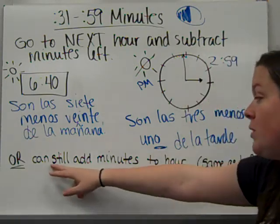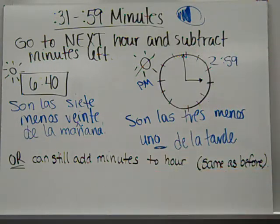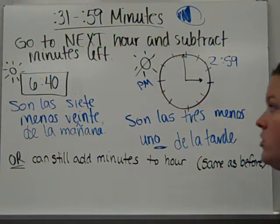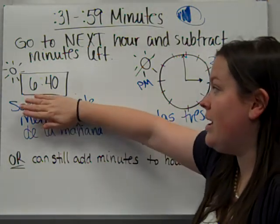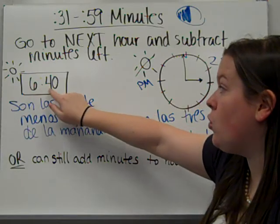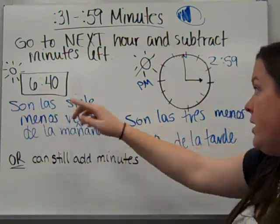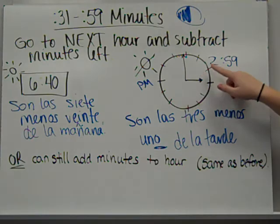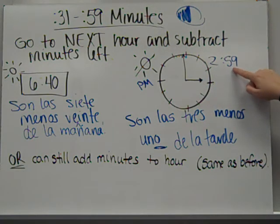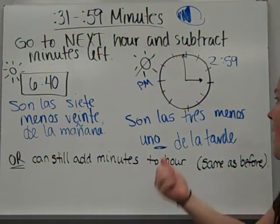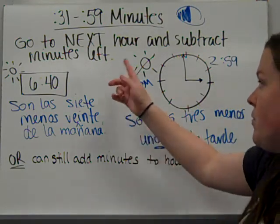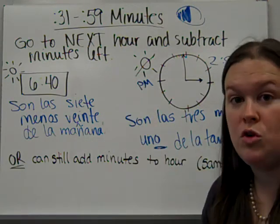If this was super confusing to you how the times past thirty minutes work. Please do know that you can still go the same way as before. You can add minutes to the hour. Just like we used to do. So in this case son las seis y cuarenta. And here it would be son las dos y cincuenta y nueve. I think that one's more writing. I prefer the minusing. But you can choose which one you want. They're both correct.